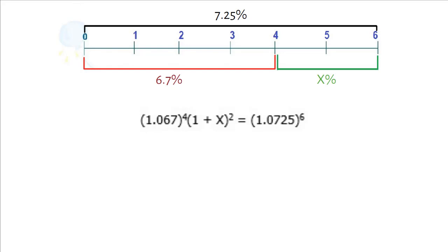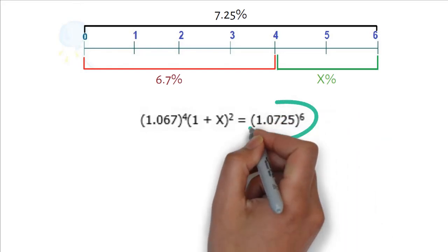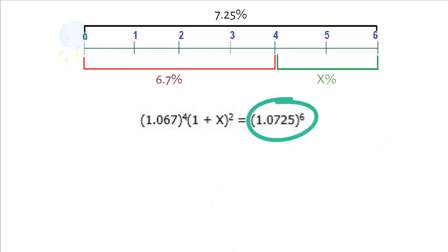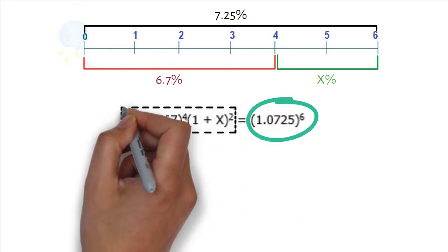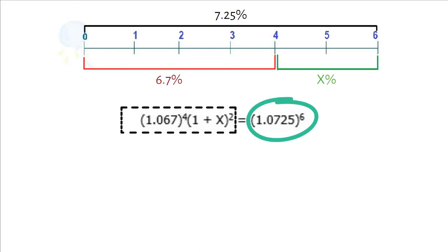What this equation means is, if you invest $1 at the rate of 7.25% for 6 years, you will get the same amount by investing $1 at the rate of 6.7% for 4 years and the accumulated